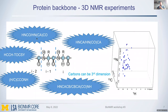We'll mostly focus on HNCO, HNCACO, and HNCACB experiments and go into details of what these give us. The other experiments are complementary - you start with these first, and then collect the other experiments as you proceed through your assignment process.